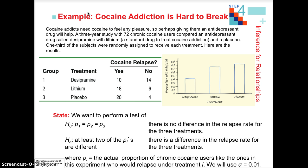Our alternative hypothesis is that at least two of the proportions are different, meaning there is a difference between which treatment they received and whether or not they relapsed. Our parameter of interest is the actual proportion of chronic cocaine users, like those in this experiment, who would relapse under the different treatments.